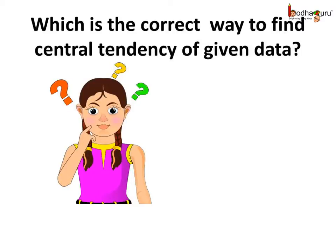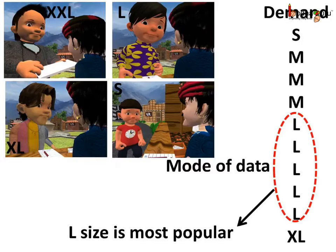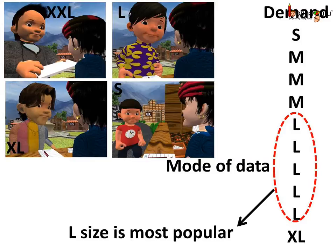So which is the correct way to find the central tendency of given data in such cases? Later, we saw the shopkeeper did not place the order by the average number of shirts sold. Instead, he placed the order based on which size was more popular. For example, if 10 people bought shirts, which size did most people want? Here is a record of sizes asked by 10 customers: small, medium, medium, medium, medium, large, large, large, large, large, and extra large. The size that appears most frequently in the list is large, and the shop owner should order more of it.